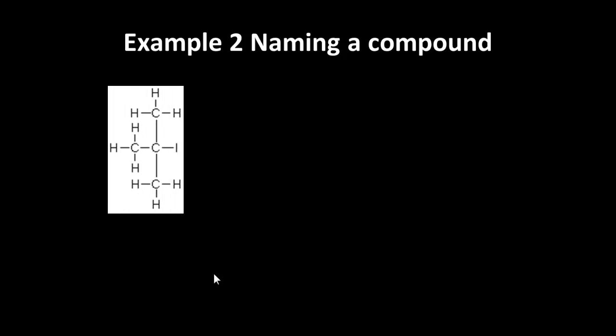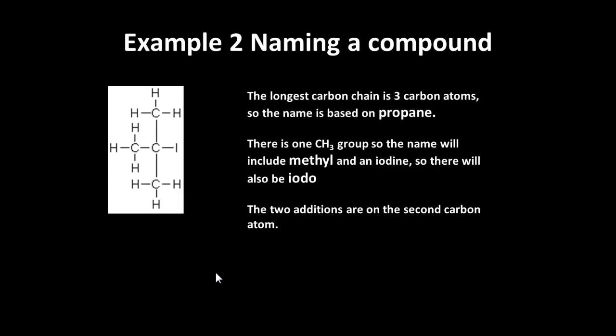Another example: in this case we've got depending which way you look at it a chain of three or a chain of two so we'll be looking at the chain of three that's the longest one. You can also see that there's an iodine there. So longest chain being a chain of three carbon atoms the name is based on propane and there is a CH3 group, a methyl group, and there's an iodine and they're on the second carbon atoms so we're going to name it 2-iodo-2-methyl propane.